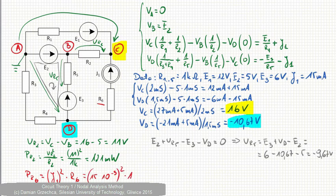J1 is 15 times 10 to minus 3 squared times R6, 1 times 10 to the third. It is 225 mW.